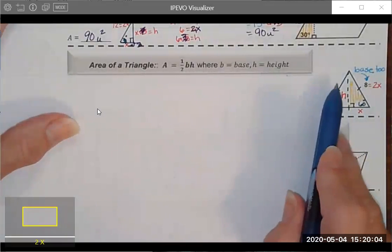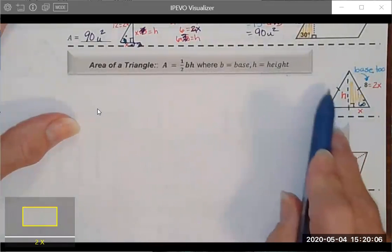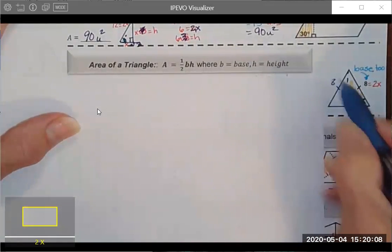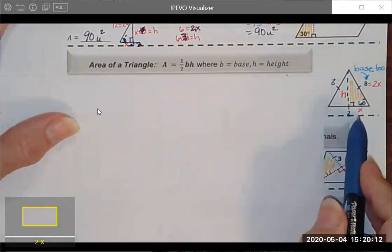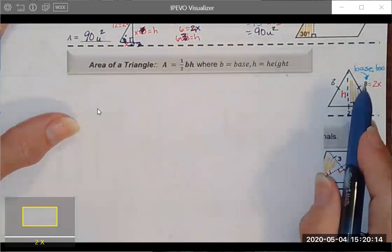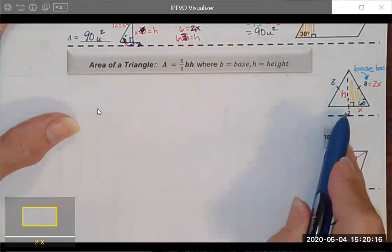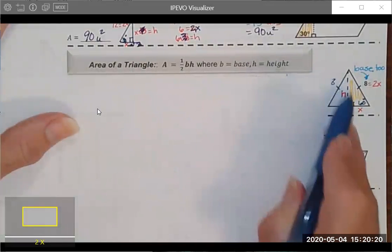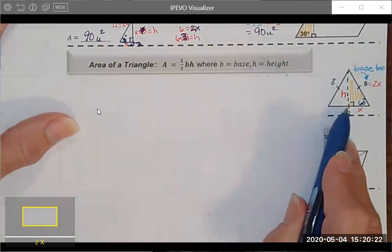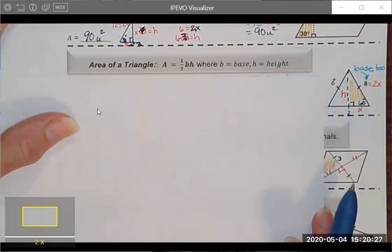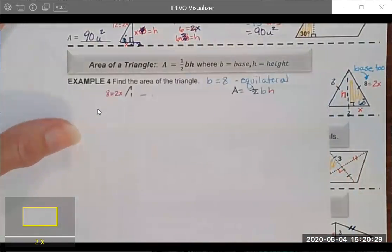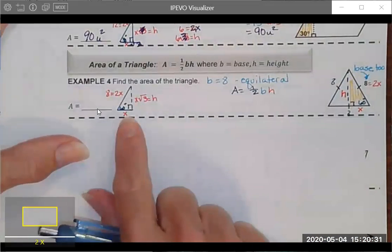I noticed first off that this is an equilateral triangle which means all of my sides are going to be eight in length. That's my base wherever it happens to be or wherever I happen to draw it is going to be eight. I went ahead and dropped an altitude because that is the height of my triangle. It goes from the vertex to the midpoint of the base. Because it's equilateral I have 30, 60, 90 special right triangles. So I drew that triangle over here.